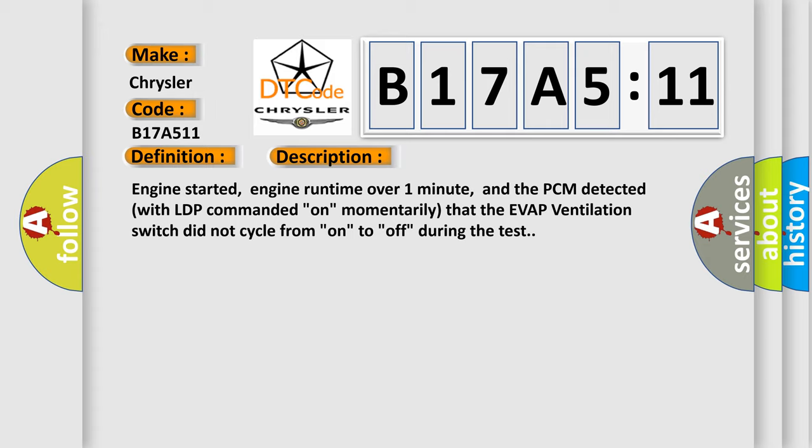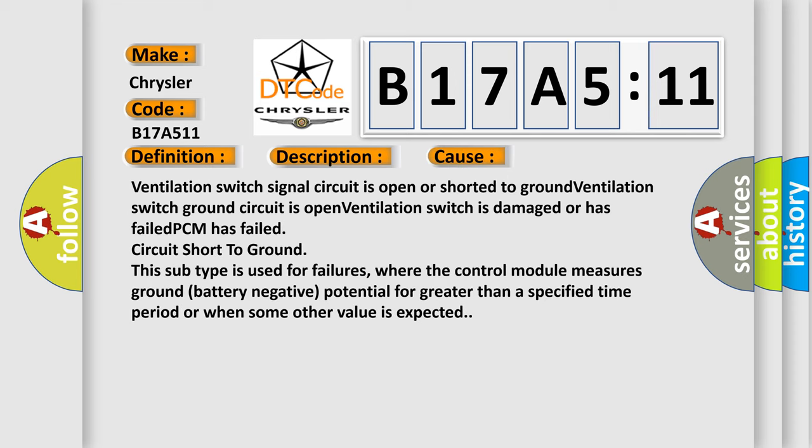This diagnostic error occurs most often in these cases. Ventilation switch signal circuit is open or shorter to ground, ventilation switch ground circuit is open, ventilation switch is damaged or has failed, PCM has failed. Circuit short to ground: this subtype is used for failures where the control module measures ground battery negative potential for greater than a specified time period or when some other value is expected.